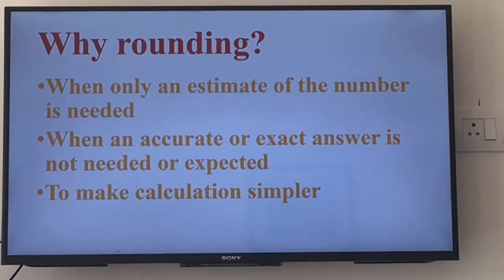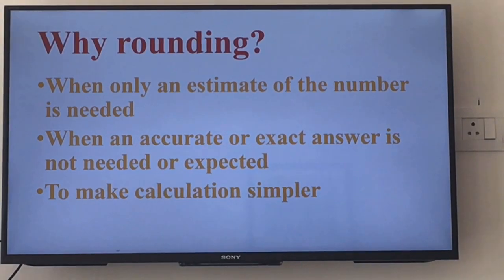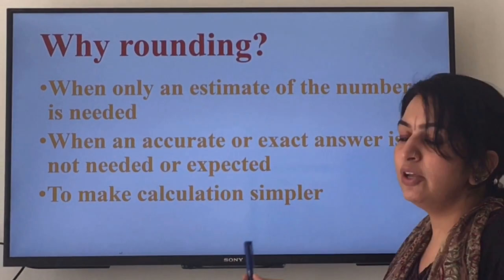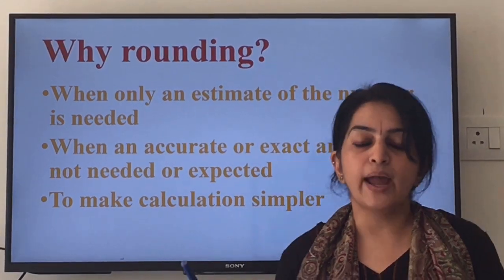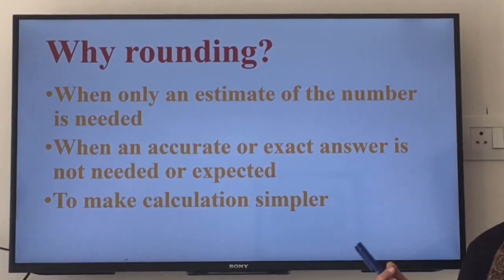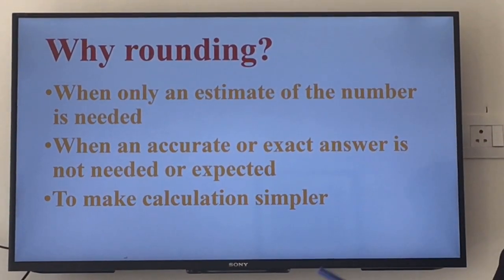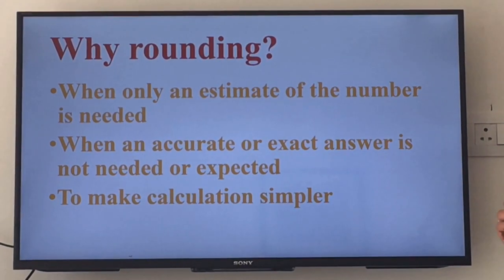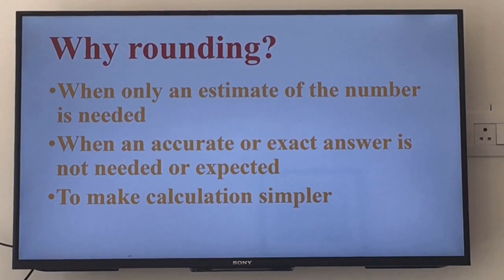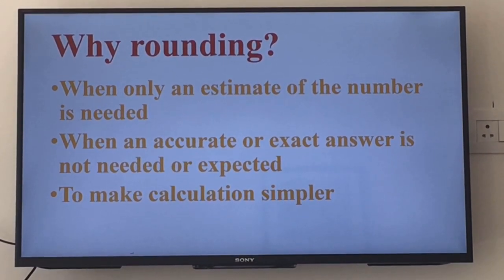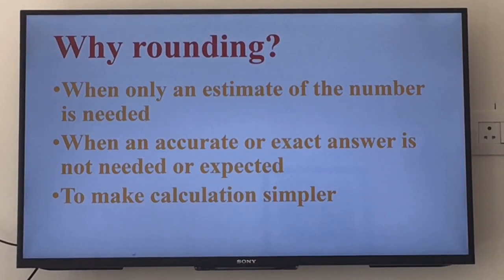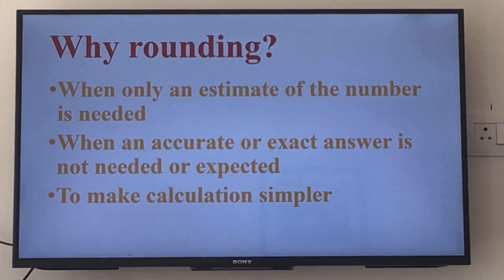Why do we need to round numbers? In many instances we don't need an exact answer. Suppose if anyone asked your age, your answer would be 'I'm 10 years old' — you will not say 'I'm 10 years, 3 months and 4 days old.' So we use rounding when only an estimate is needed, when an accurate or exact answer is not needed or expected, or to make calculation simpler.